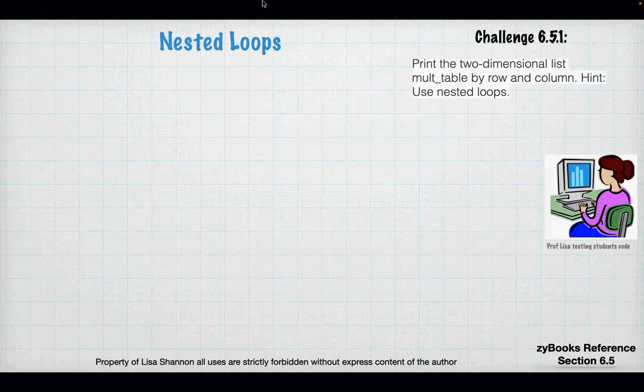Nested loops are made for multi-dimensional lists - that's why. If you have something with a row and a column and you have to loop through it, you need two loops. For every dimension in the list you're going to need a loop. If you have three-dimensional lists you need three loops. Every dimension of the list has to have its own for loop.